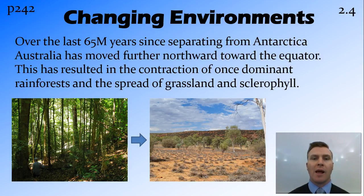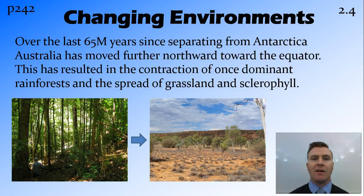So as it became hotter and drier, we've moved from the primarily rainforest landscape that once covered about 90% of Australia to the savannah, which is dominated by grass and sclerophyll, which is basically tough grass.